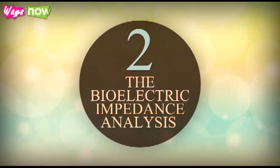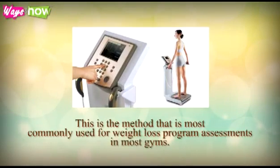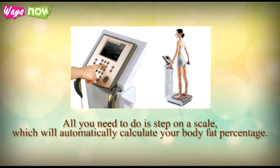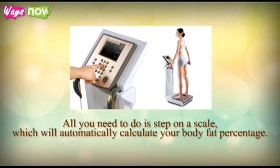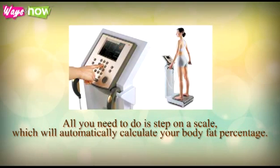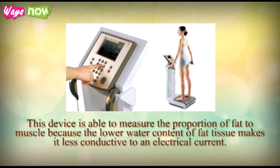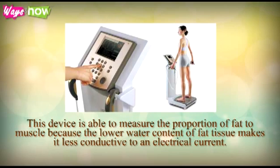2. The Bioelectric Impedance Analysis. This is the method most commonly used for weight loss program assessments in most gyms. All you need to do is step on a scale, which will automatically calculate your body fat percentage. This device is able to measure the proportion of fat to muscle because the lower water content of fat tissue makes it less conductive to an electrical current.